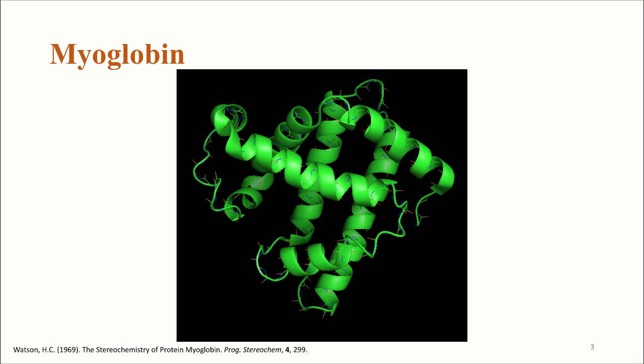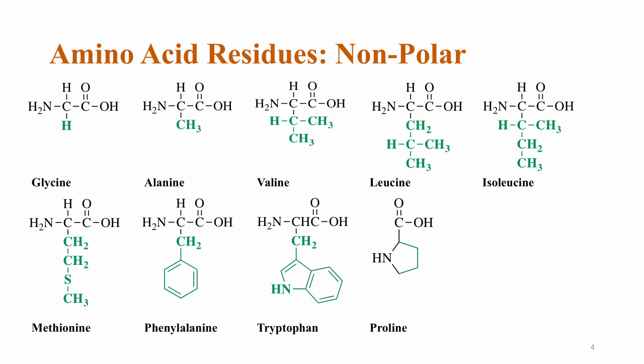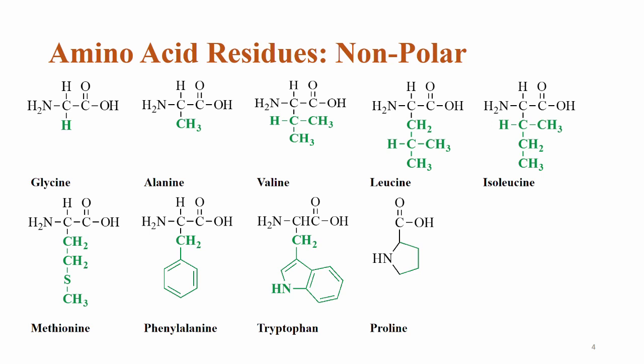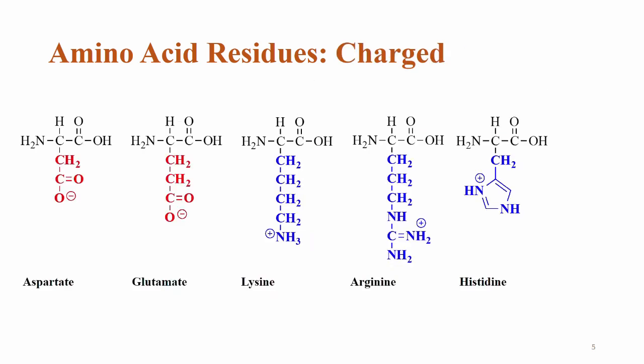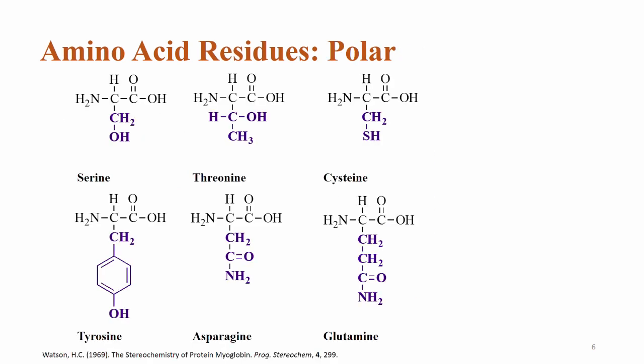One striking fact about the interior of this protein is that for the most part, it consists almost entirely of non-polar residues, such as valine, alanine, isoleucine, leucine, and phenylalanine. For the most part, charged residues such as aspartate, glutamate, lysine, and arginine are on the outside, mixed with some other polar amino acid residues.